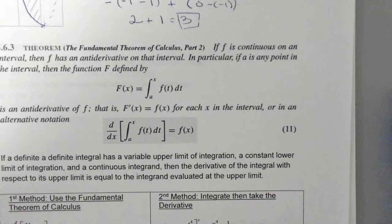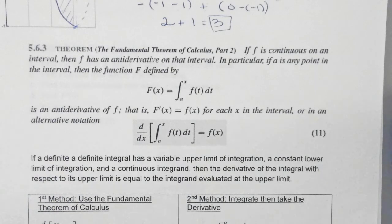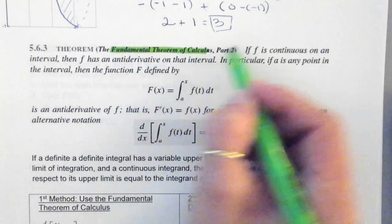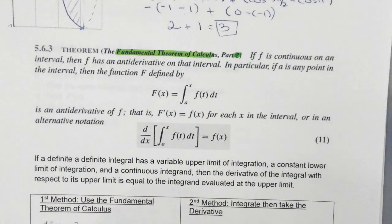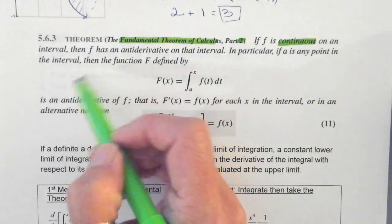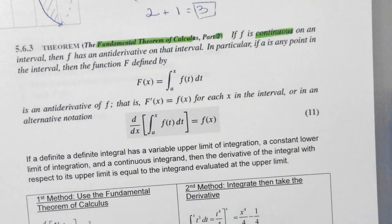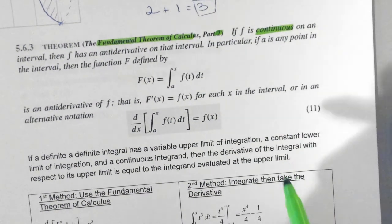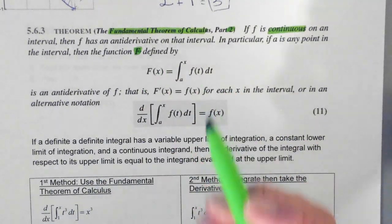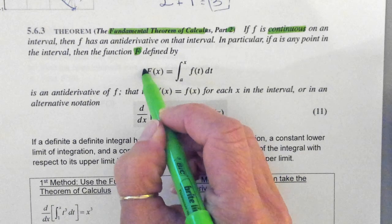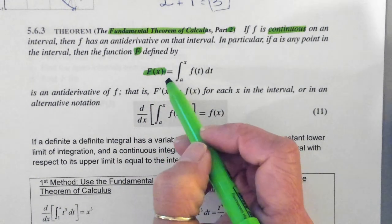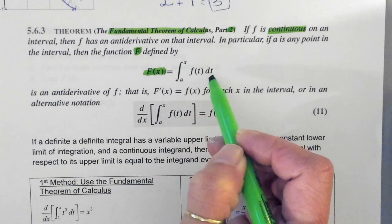Let's talk about FTC part 2. Fundamental theorem of calculus part 2. So again, your function must be continuous on an interval. And if little f has an antiderivative on that interval, and a is any point in the interval, then the function indicated by capital F is defined as F of x is equal to the integral from a to x of f of t dt.